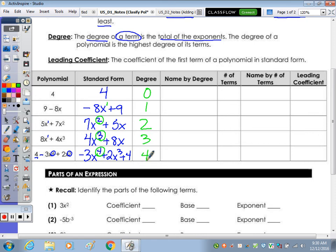And the names, a degree of 0, or just a number, is called a constant. We graph that like y equals 4 is a horizontal line, it remains constant, there is no change in a slope. A degree 1 is linear, that's kind of like mx plus b.